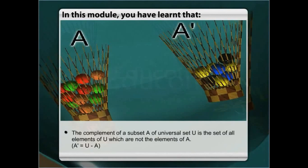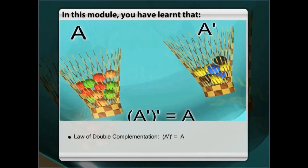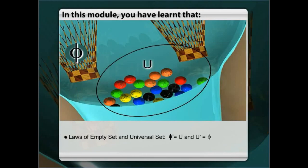In this module, you have learnt that the complement of subset A of universal set U is the set of all the elements of set U which do not belong to set A. Complement laws state that A union A complement is equal to universal set U, and A intersection A complement is equal to empty set phi. Law of double complement states that complement of A complement is equal to A. Laws of empty set phi and universal set U state that complement of empty set is equal to universal set, and complement of universal set is equal to empty set.